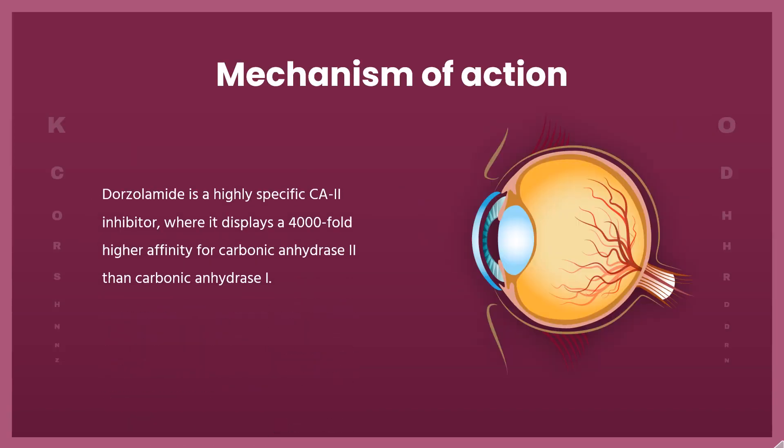Mechanism of Action. Carbonic anhydrase (CA) is a ubiquitous enzyme that catalyzes the reversible hydration of carbon dioxide to bicarbonate ions and dehydration of carbonic acid. In the ocular ciliary processes, the local production of bicarbonate by CAs promotes sodium and fluid transport. CA2 is a key isoenzyme found primarily in red blood cells (RBCs) that regulates aqueous humor production. Dorzolamide is a highly specific CA2 inhibitor, displaying a 4,000-fold higher affinity for carbonic anhydrase 2 than carbonic anhydrase I.